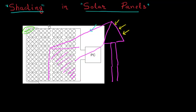Another thing we want to understand is what is called soiling. So let's say if you place this panel in a desert, or if you place it on your roof and there was no rainfall for the last few months, a lot of dust can accumulate on top of this panel. It can limit the amount of light which is incident on my solar cells, and that is known as soiling. I want to understand how much is the loss of my energy output because of these effects.